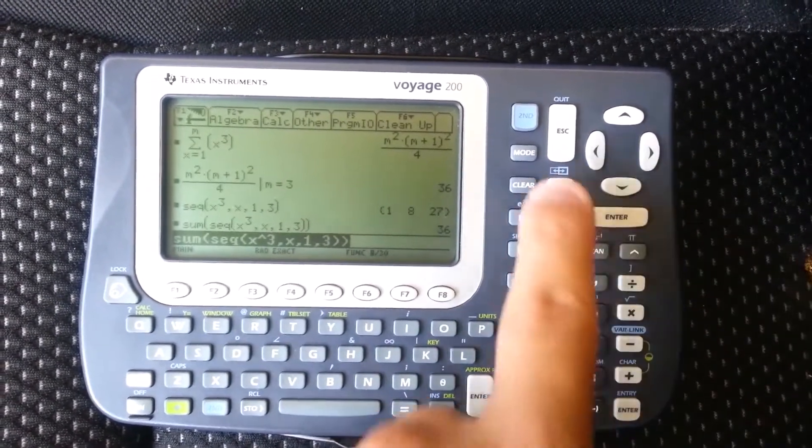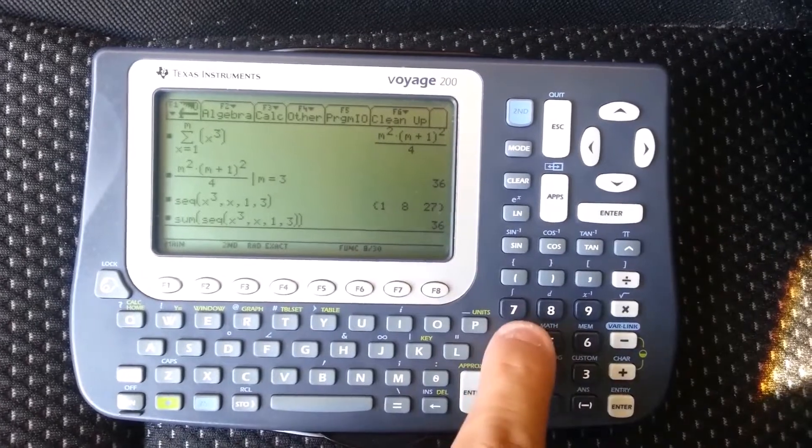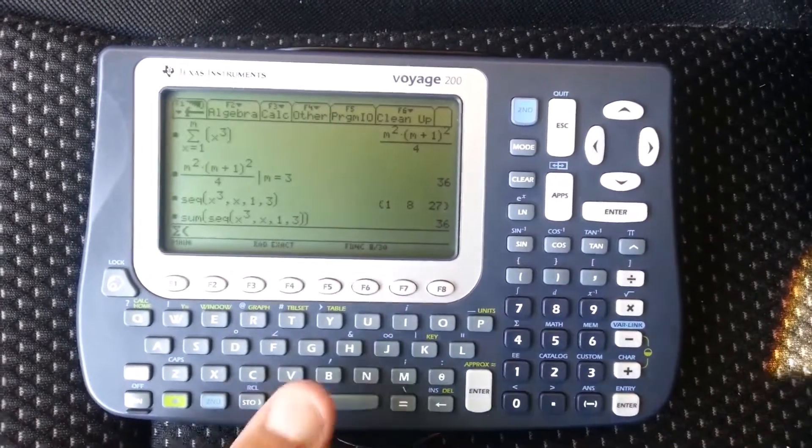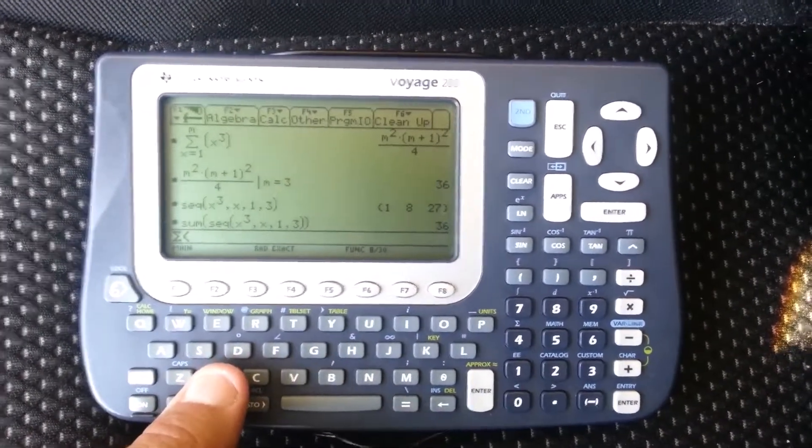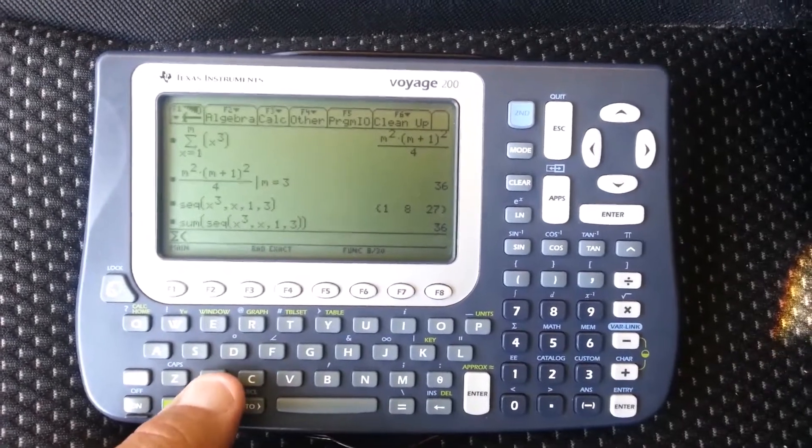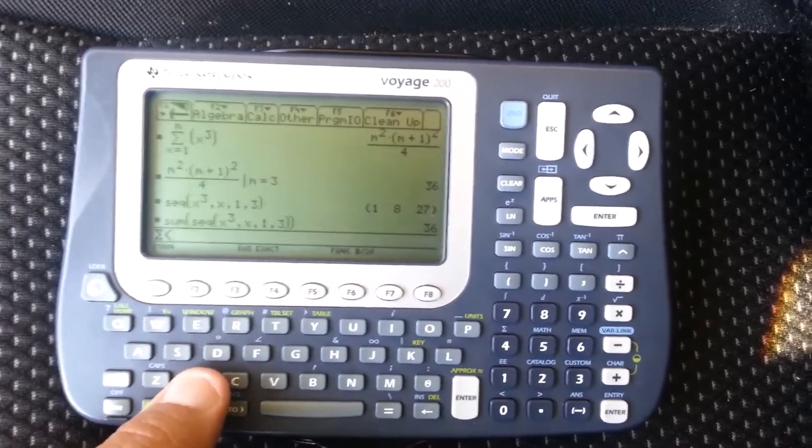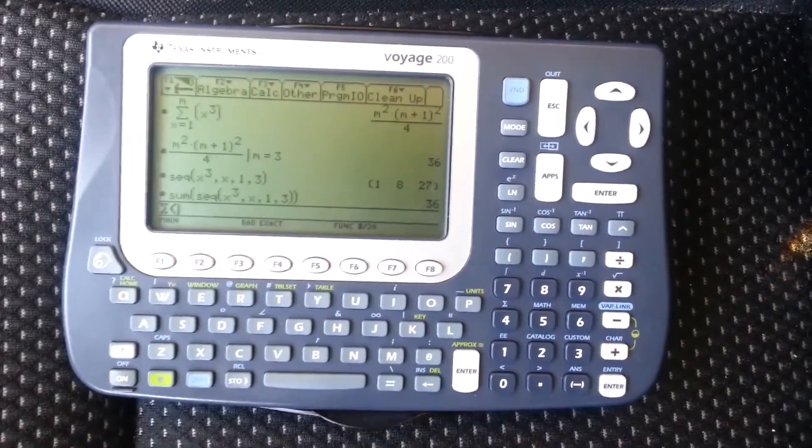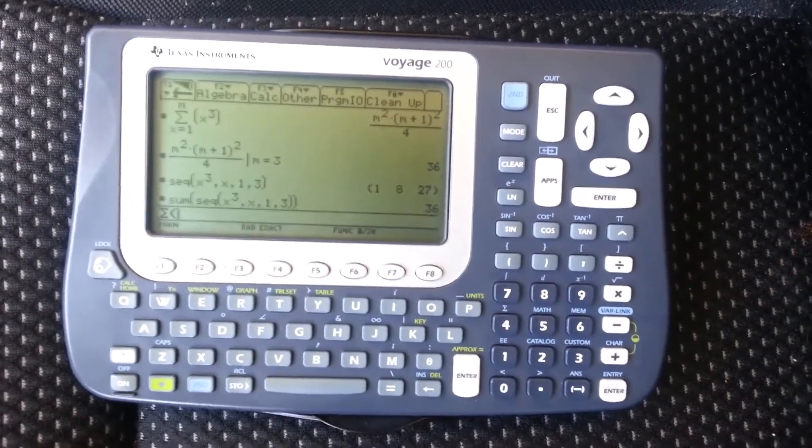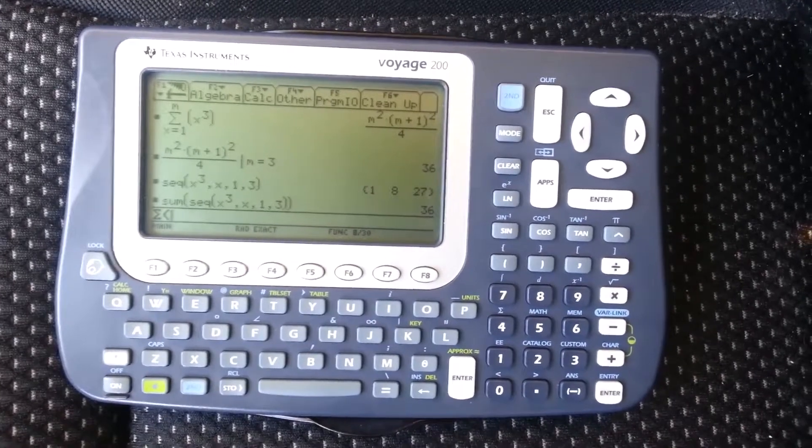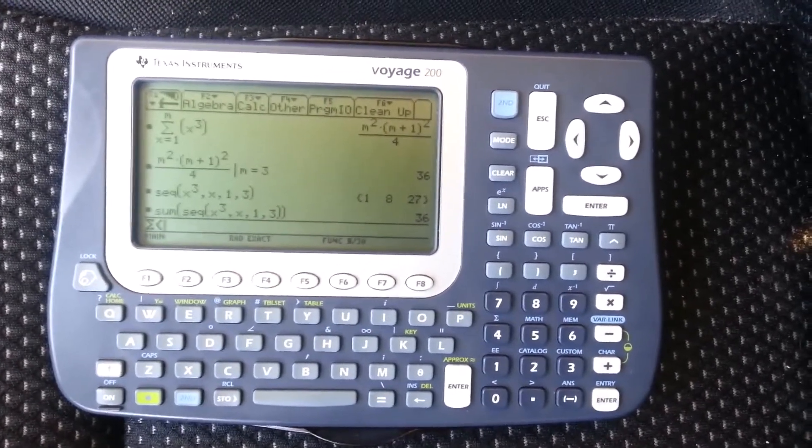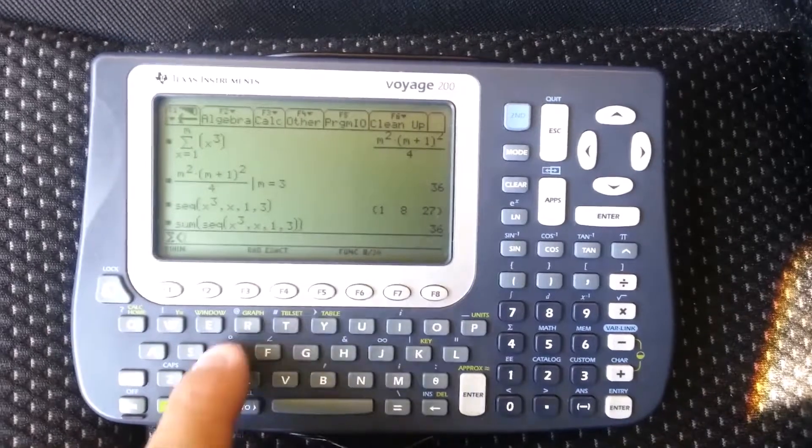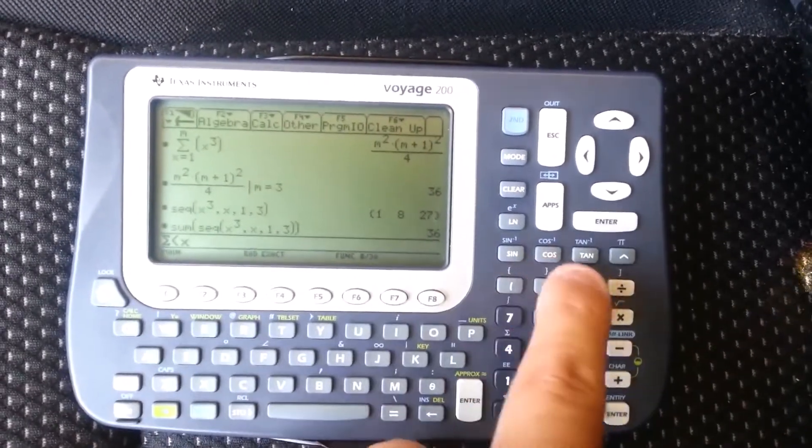A famous one is the story of, I think it was Gauss, in school. They asked all the students to sum the numbers one to a hundred. And the slow kids, who were actually probably normal and even above average intelligence kids, were starting to add up the numbers, you know, one plus two plus three plus four, all the way up to a hundred.